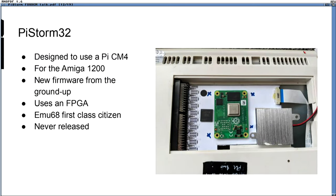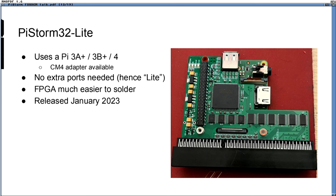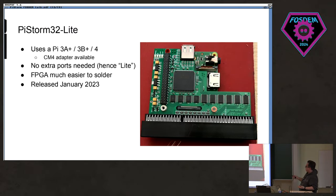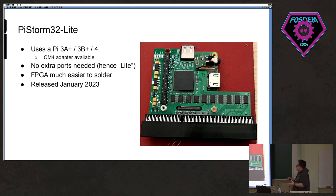Then the PiStorm32 came along — that project was scrapped. Essentially it was the same kind of thing but for the 32-bit Amigas. It became very hard to build and required a Pi CM4. It became difficult and expensive, so we built the PiStorm32 Lite instead, which doesn't have all the ports. It has a nice big FPGA instead of a CPLD — an FPGA has much more logic but you have to flash it every time you turn it on. That was basically the start of what became the A1200 version, which is the current peak of PiStorm, released about a year ago and still going strong.